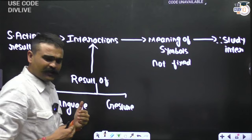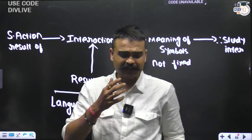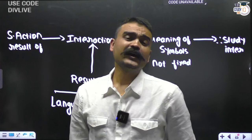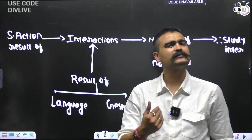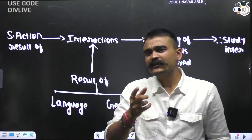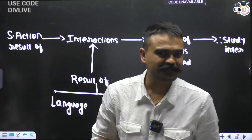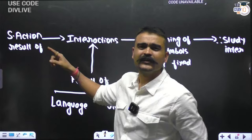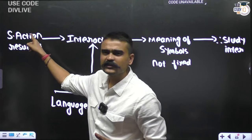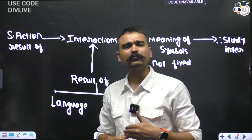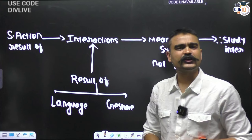Symbolic interactionists advocate that until we interact, how will action happen? Until there is interaction, there will be no action. Therefore, they advocate social action is the result of interactions. But for this interaction - as I spoke in Kannada just now, there is a possibility you did not understand - I am pretty much sure you would not have understood. Why? Because that is Kannada language, and until you know Kannada, it is not possible for you to largely grasp the meaning of that particular aspect. Symbolic interactionists say: interactionists advocate that any action - until we interact - how will action happen? Until interaction, there will be no action.